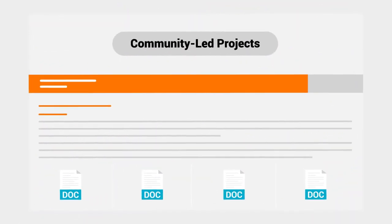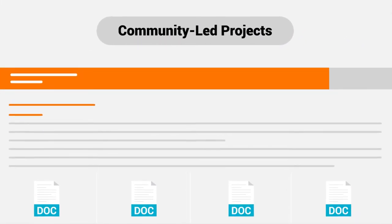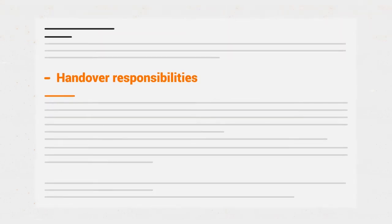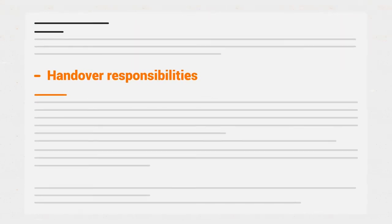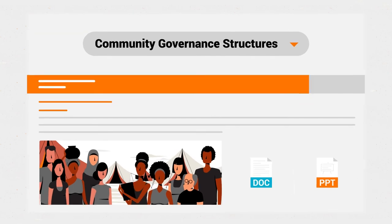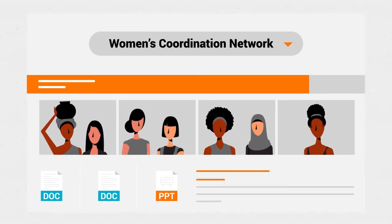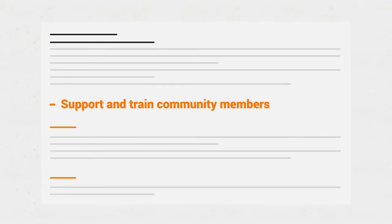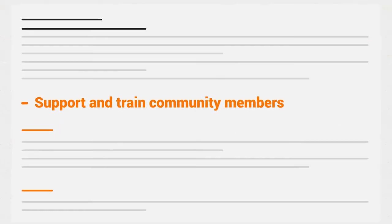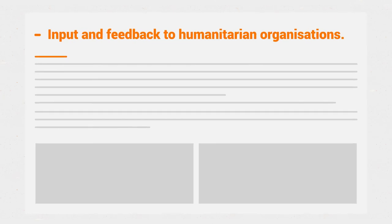For example, the tools for the community-led projects guide the organisation in how to hand over some of the project design and management responsibilities to the displaced community. The Community Governance Structures and Women's Coordination Network chapters have extensive tools for how to support and train community members in interacting with and providing input and feedback to humanitarian organisations.